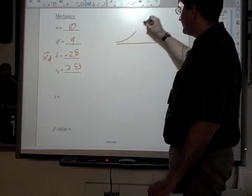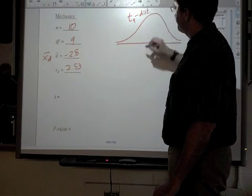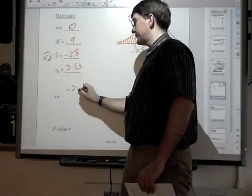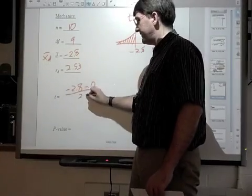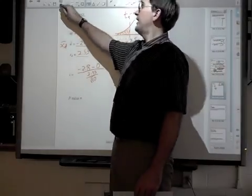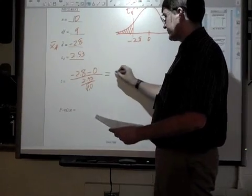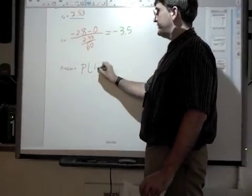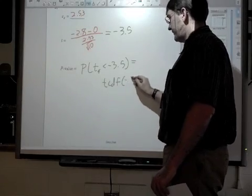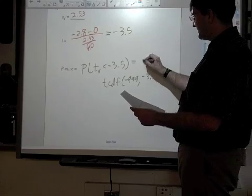So in our student's t-distribution with nine degrees of freedom, we expect a difference of zero. We have observed a difference of negative 2.8. And so as usual, we have our t-score: negative 2.8 minus zero divided by 2.53 over the square root of 10. None of this is any different than what it was before. This gives me a t-score of negative 3.5. And so my p-value is the probability that t with nine degrees of freedom is less than negative 3.5. Going into your calculator, typing in tcdf, negative 999 to negative 3.5 with nine degrees of freedom, gives us a p-value of 0.0034.